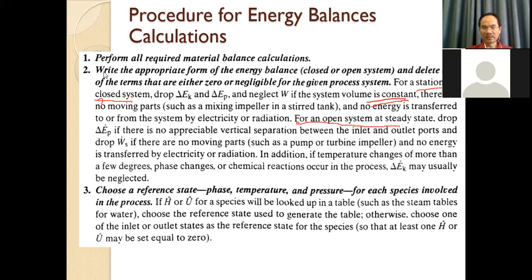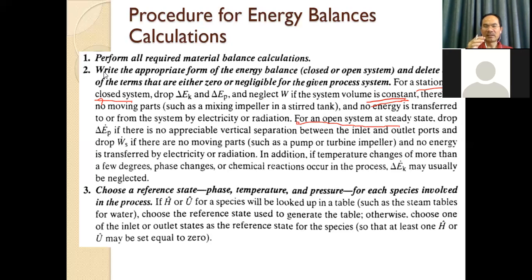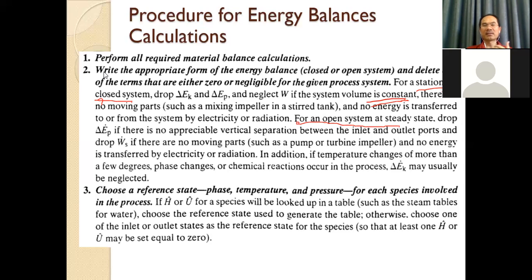However, if the temperature change is more than a few degrees Kelvin, or if there is a phase change or chemical reaction, delta Ek may be necessary — meaning the change in temperature or phase change or chemical reaction energy is higher than the kinetic energy, so we cannot cancel it. The second step is to identify the assumptions — what terms we can cancel: delta Ek, delta Ep, work. Then the next step is to choose a reference state.